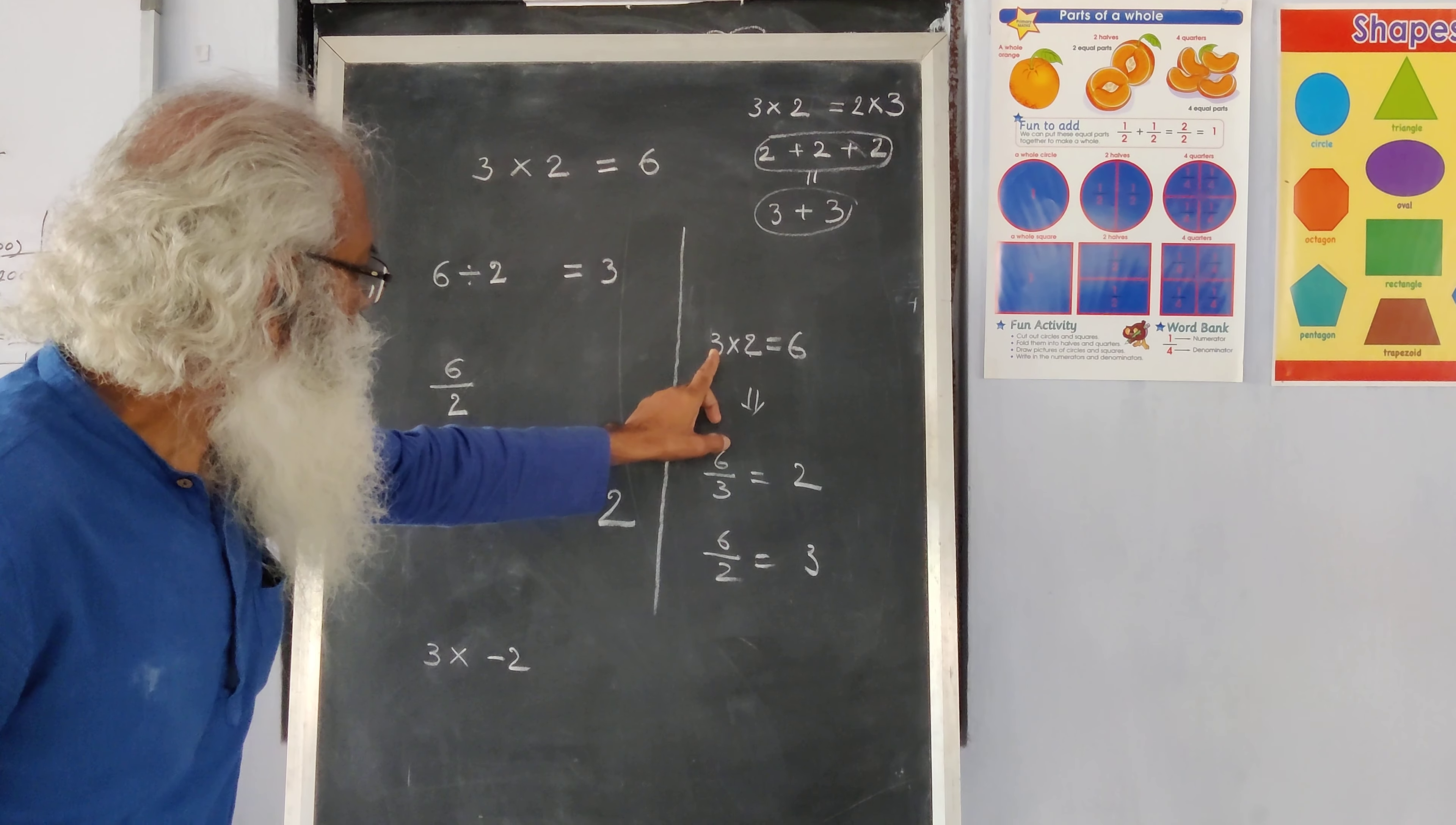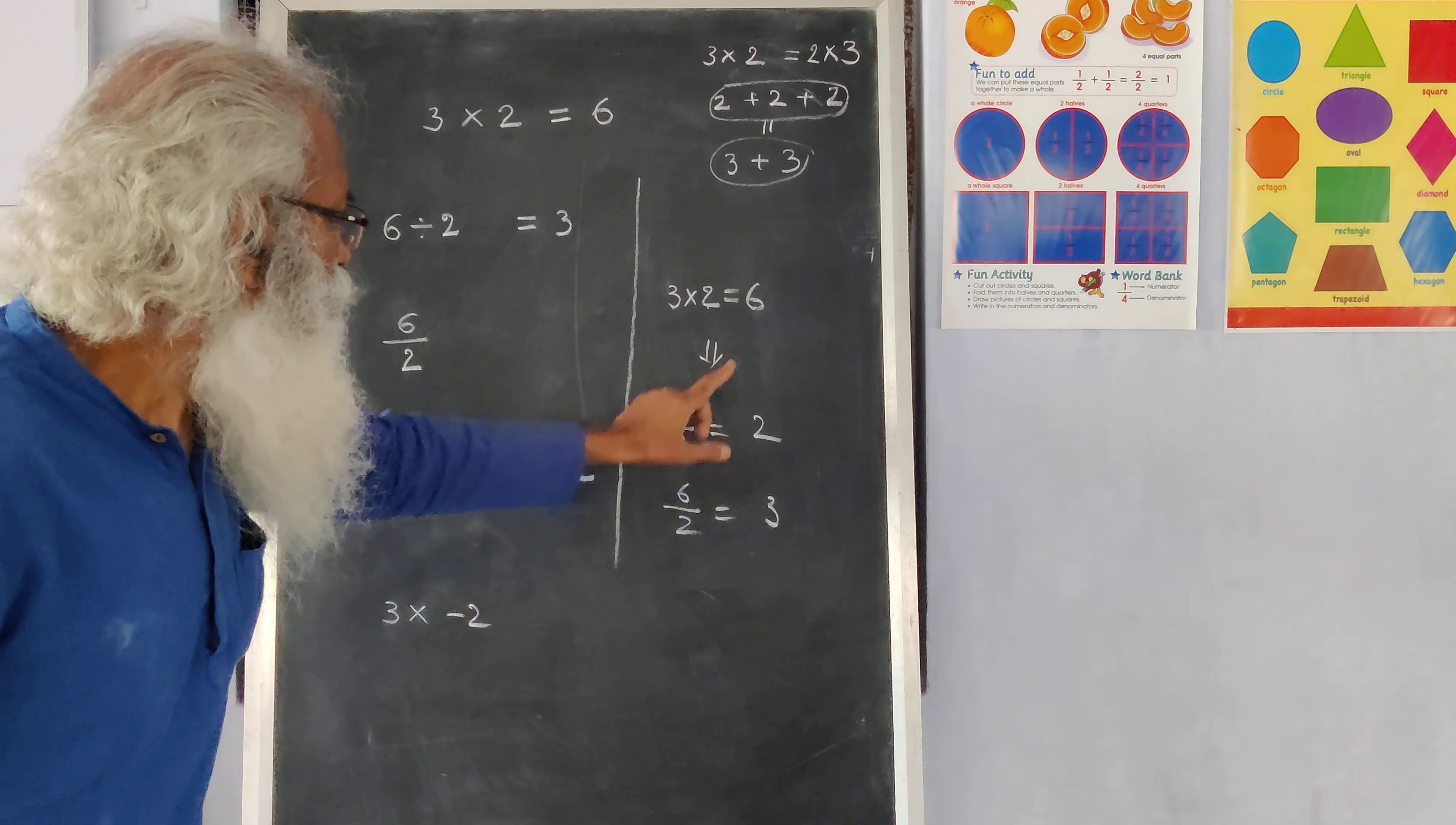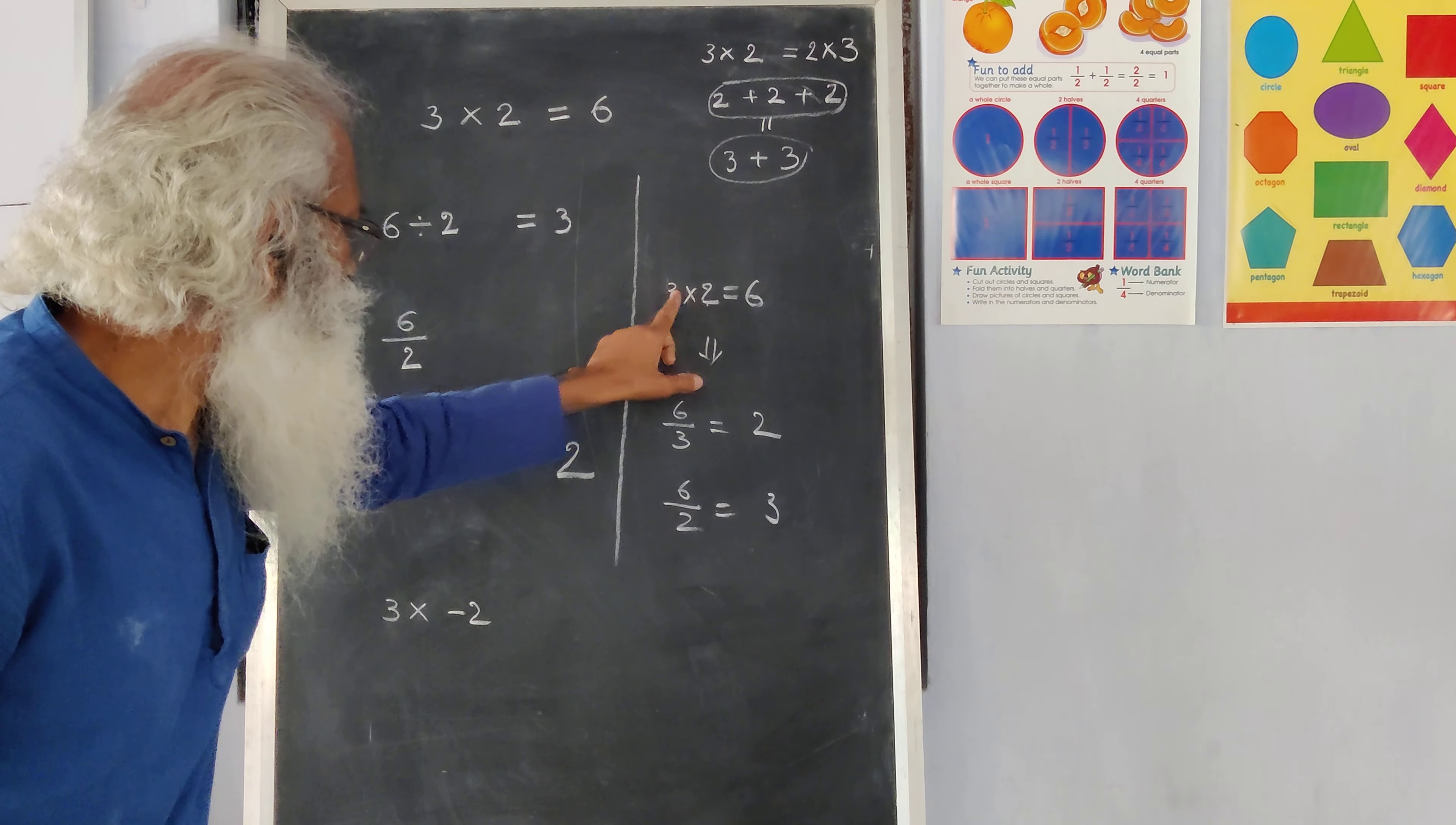So we have noted one thing. Whenever you multiply two numbers, 3 times 2 is something, 6 in this case. So you want to divide 6 with this number, the answer is this number. So 6 divided by 3 is 2. 6 divided by 2 is 3.